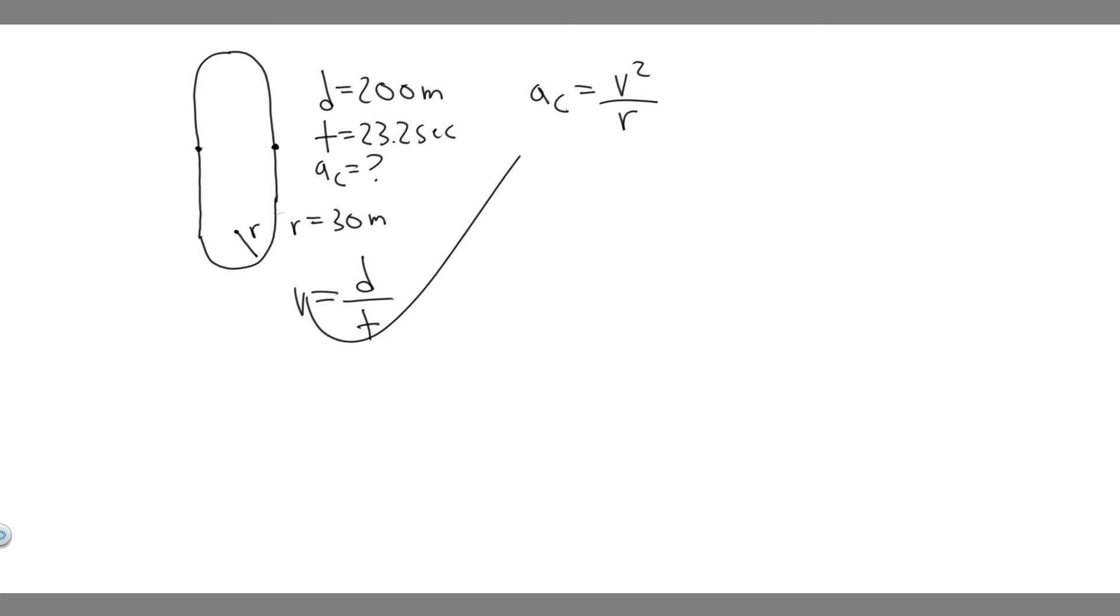So what we can do is just plug in the velocity. The distance he's going to run is 200 meters over 23.2 seconds. So go ahead and plug this in: 200 divided by 23.2. When you do that, you're going to get 8.62 meters per second. That's going to be the velocity.